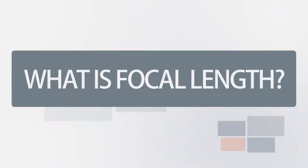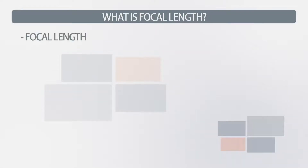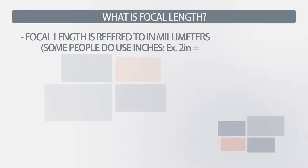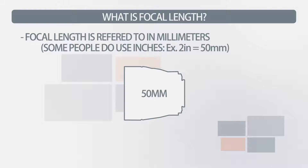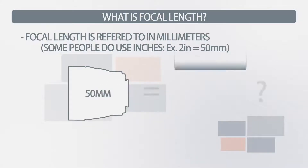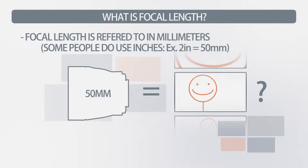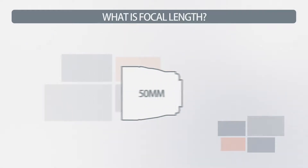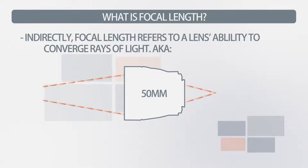So let's get started. What is focal length? I'm sure you've got some idea of what it is. Focal lengths are referred to in terms of millimeters — for instance, a 50mm lens. But what does that 50mm refer to? There are sort of two answers. One is the technical answer, which says what the 50mm is a measurement of. The other is the more artistic side, as far as the effect that a 50mm lens has on the image. Indirectly, the focal length of a lens refers to its ability to converge light — its magnification factor.